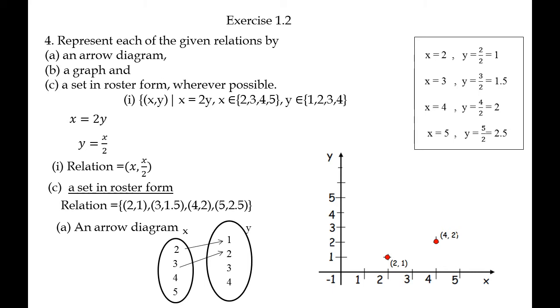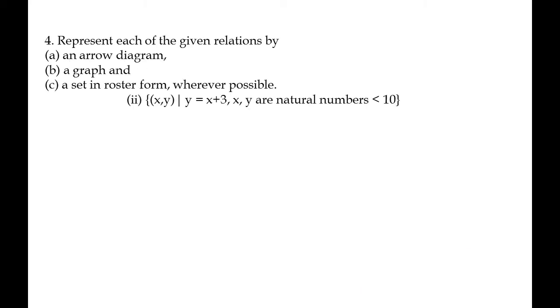Second sub-question: x, y such that Y is equal to X plus 3, where X and Y are natural numbers less than 10. X equal to {1, 2, 3, 4, 5, 6, 7, 8, 9}, Y is equal to {1, 2, 3, 4, 5, 6, 7, 8, 9}.